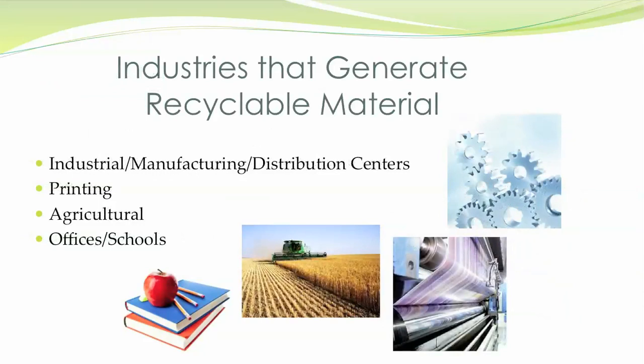When recycling facilities look at the types of material they recycle, they generally can be categorized into four categories of businesses. We generally see the same types of materials coming from industrial, manufacturing, and distribution centers, and therefore they can be placed in one category. However, materials from the remaining three categories are fairly specific to each.